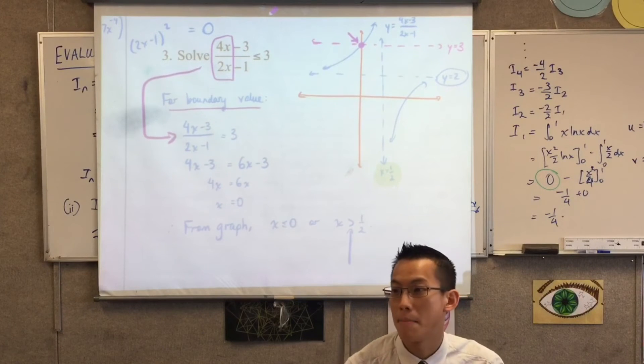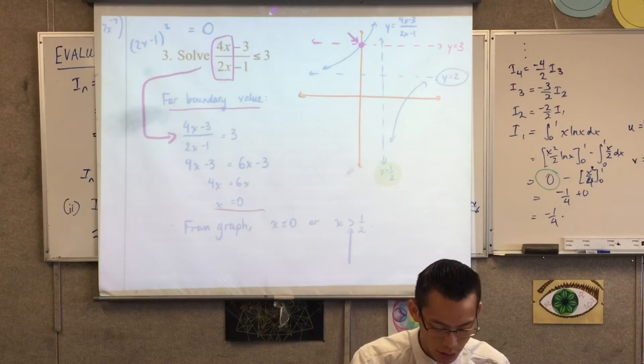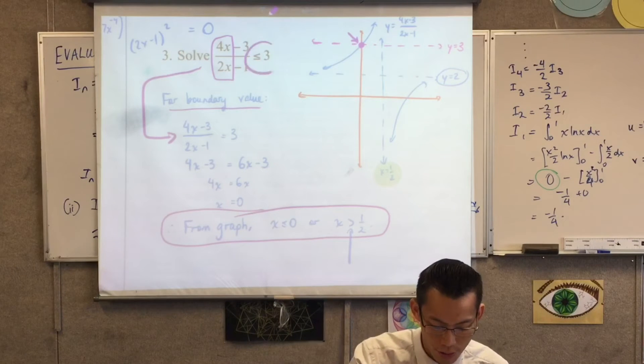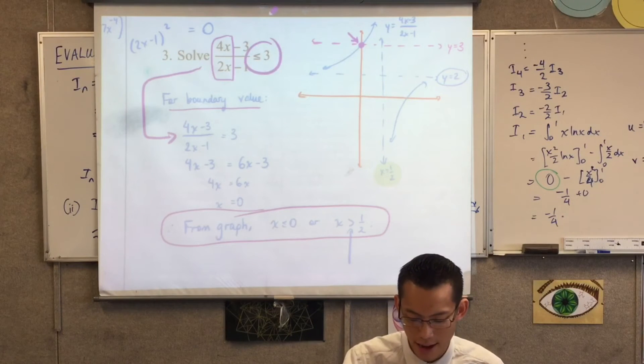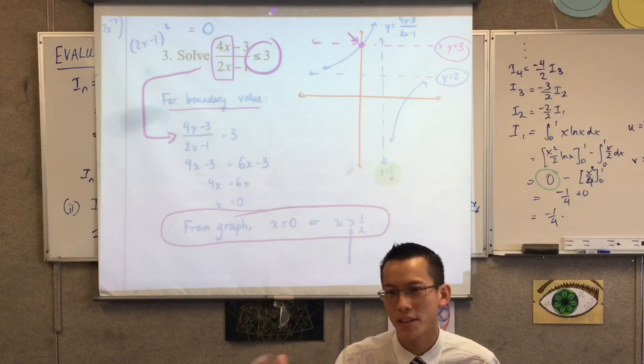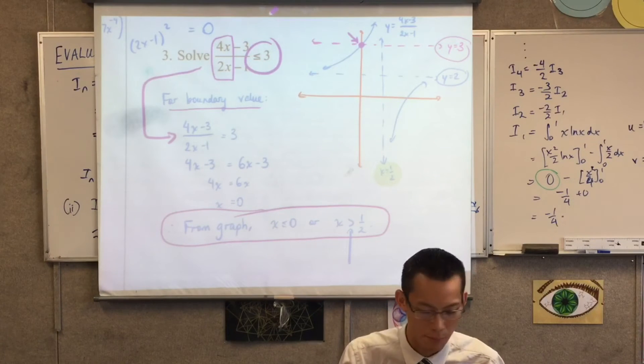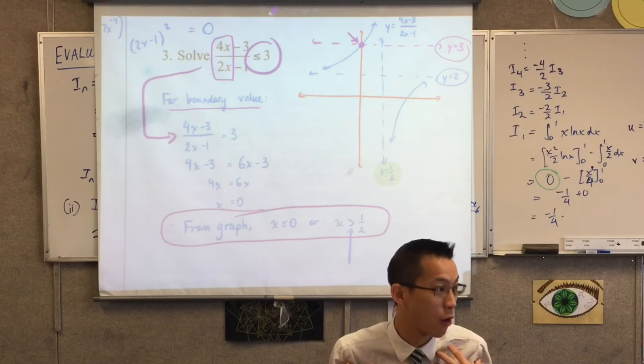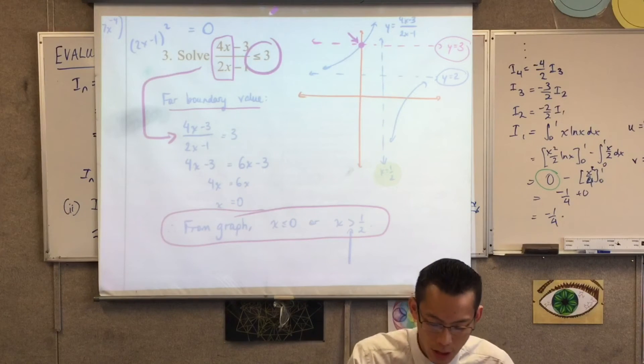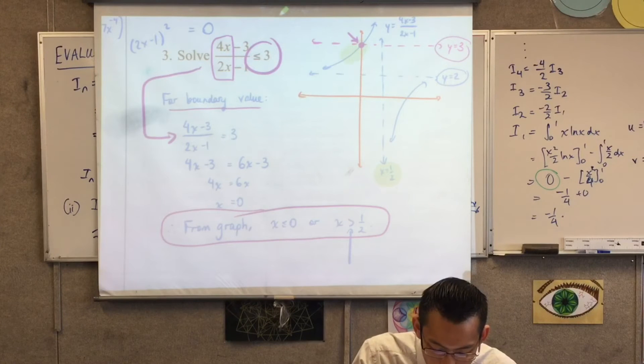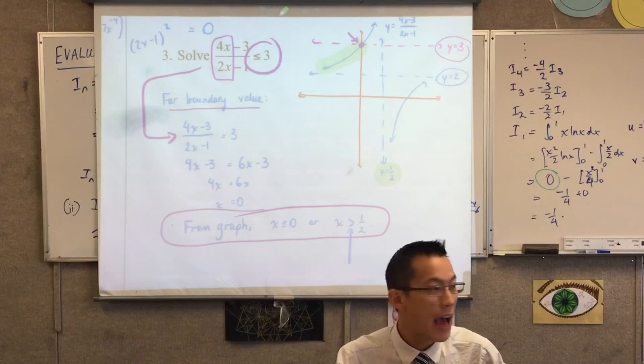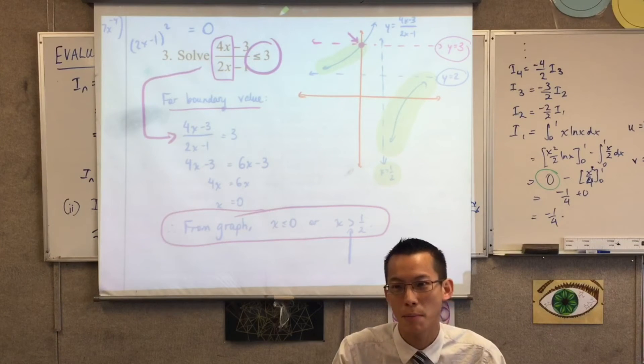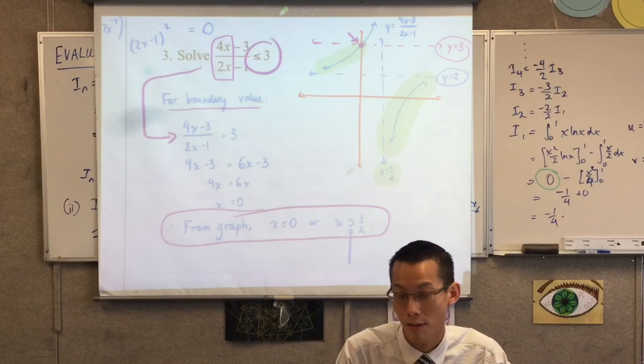It's related obviously but you're not solving the same thing and lots of students don't demonstrate that they understand there's a distinction. So I make it obvious I'm doing something different now. I go ahead and solve, there's my boundary value, and then I say look from the graph I want to be below three.